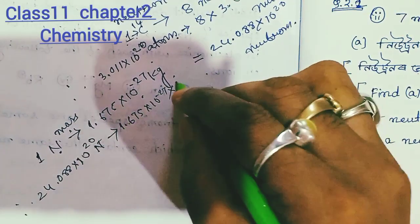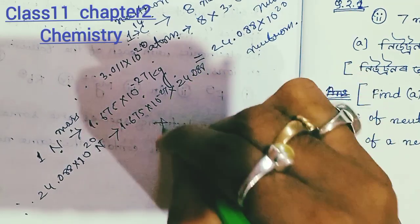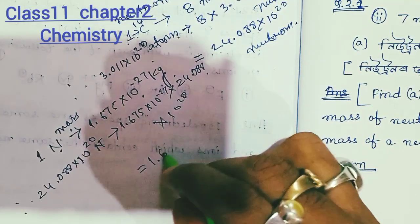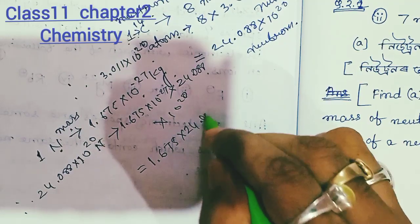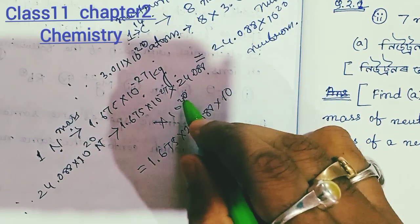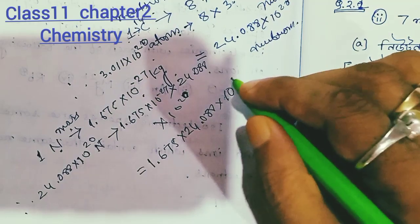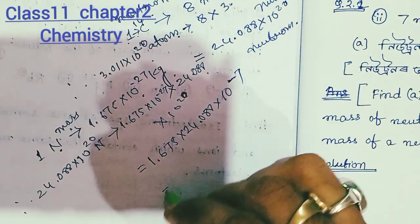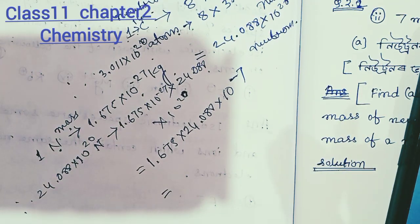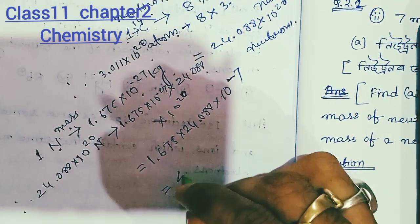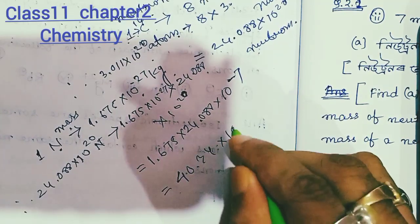So: 24.088 × 10²⁰ multiplied by 1.675 × 10⁻²⁷. The neutron mass per neutron is 1.675 × 10⁻²⁷ kg. We multiply: 1.675 × 24.088 × 10⁻²⁷ × 10²⁰.